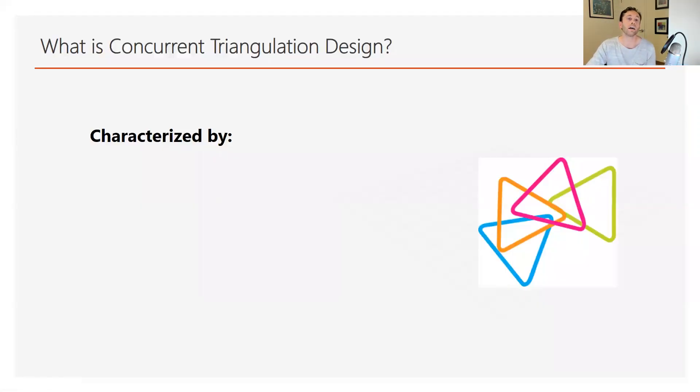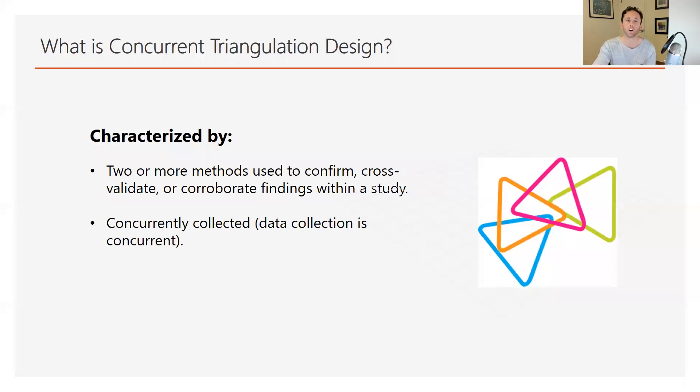So what is this design and how does it differ from other sequential designs in nature? This one is characterized by two or more methods that are used to confirm, cross-validate, or corroborate findings and results within a study. So you're going to be collecting both quantitative and qualitative data concurrently at the same time. An easy way to remember that is just CC, concurrently collected. And then the analysis is going to occur afterwards. So you're going to collect all the data, both qualitatively and quantitatively, and you're not going to analyze or interpret that data until later on.